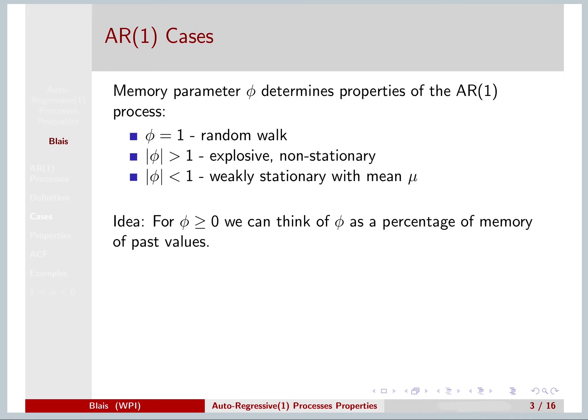In the previous lecture, we looked at different cases. If phi is 1, your AR1 is nothing more than a random walk. If phi in absolute value is bigger than 1, then your AR process is actually non-stationary and is explosive.